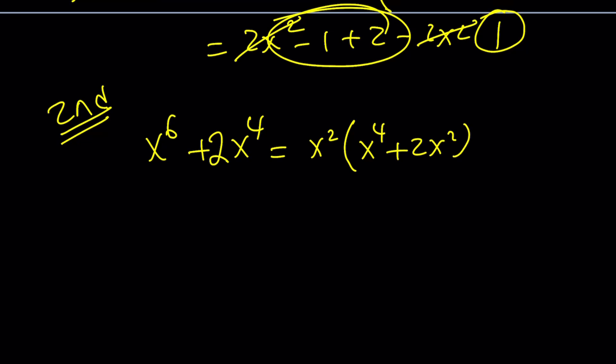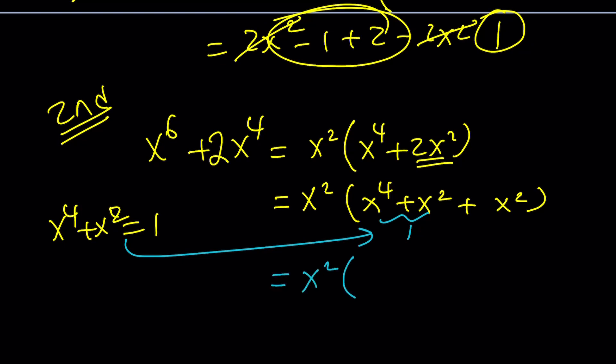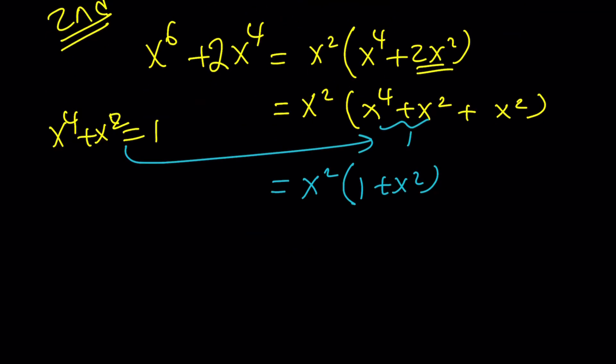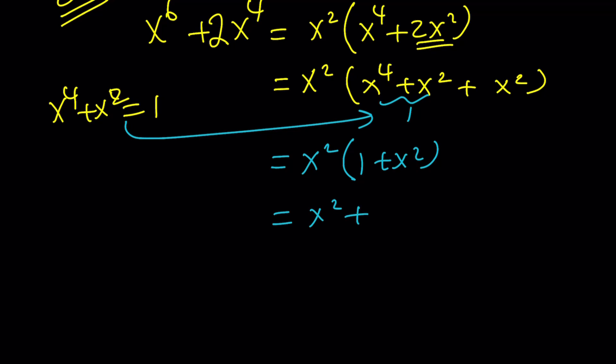And then since I'm given x to the fourth plus x squared, which is equal to 1, I can actually go ahead and break this down. Look at that. I can write this as x to the fourth plus x squared plus another x squared. You got that? 2x squared. Now, I do know that this is equal to 1 because it's given, right? So now this gives me x squared times 1 plus x squared. If you distribute, you get x squared plus x to the fourth, which is the same as x to the fourth plus x squared, which is 1. Remember, it was equal to 1. So that brings us to the end of the second method.